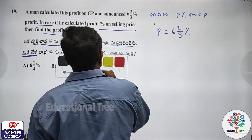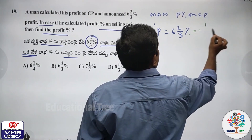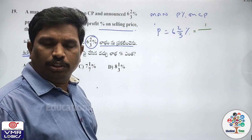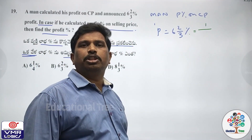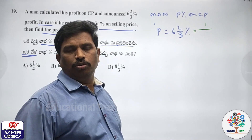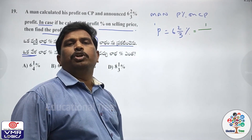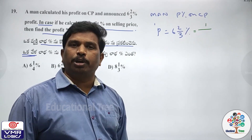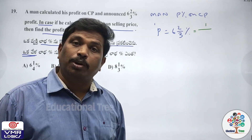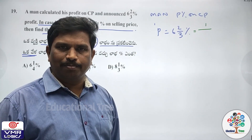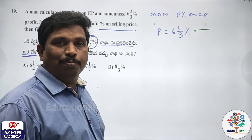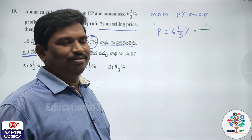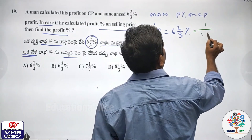What is the fractional value of 6 and 2 by 3 percent? Options: 1 by 14 or 1 by 7? 1 by 15 for 6 and 2 by 3? 1 by 16 for 6 and 1 by 4? The answer is 1 by 15 — 6 and 2 by 3 equals 1 by 15.